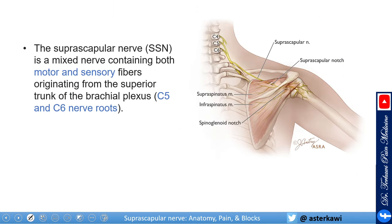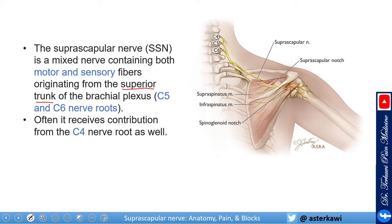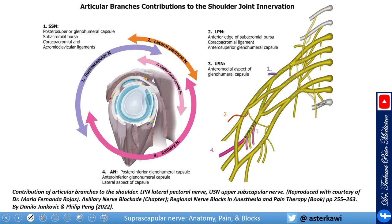The suprascapular nerve is a mixed nerve with motor and sensory fibers. It originates from the superior trunk of the brachial plexus, mainly C5 and C6, and occasionally receives contribution from C4. This is one of the major nerves supplying the shoulder. The suprascapular nerve covers a wide spectrum of the posterior superior shoulder — mainly the glenohumeral capsule — and also provides innervation to the subacromial bursa, coracoacromial and acromioclavicular ligaments.